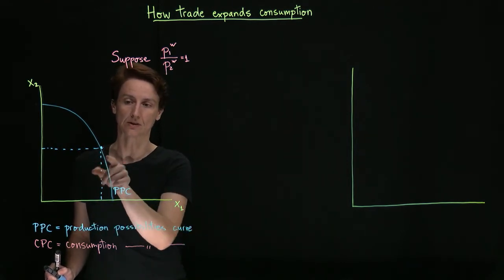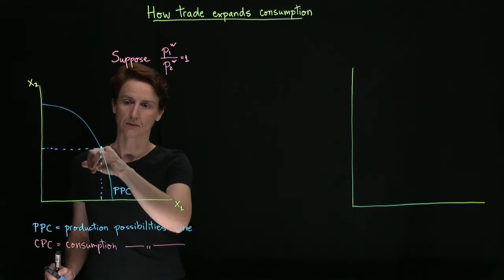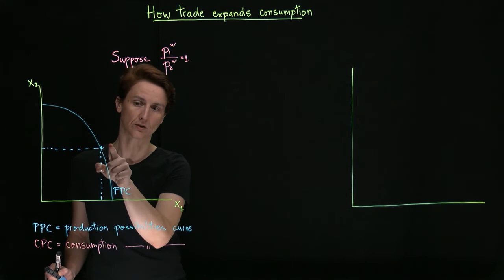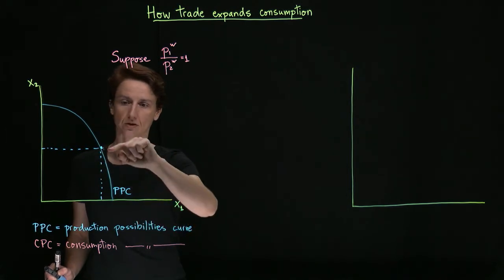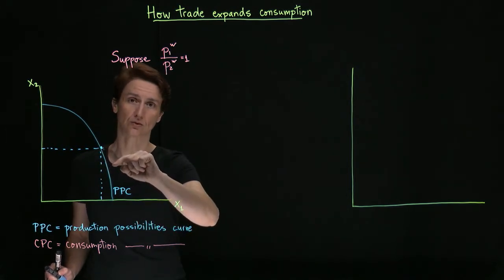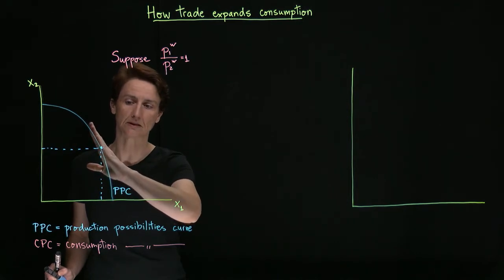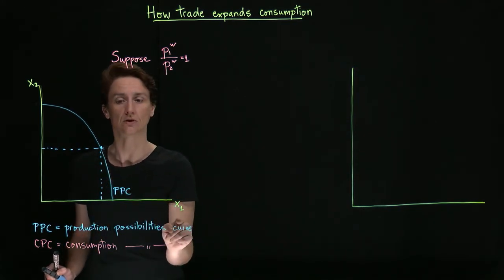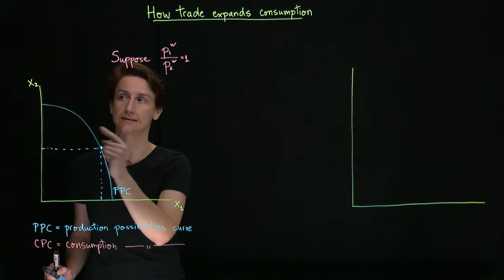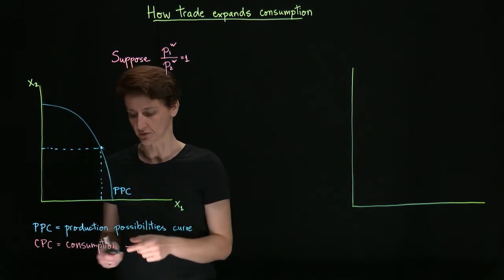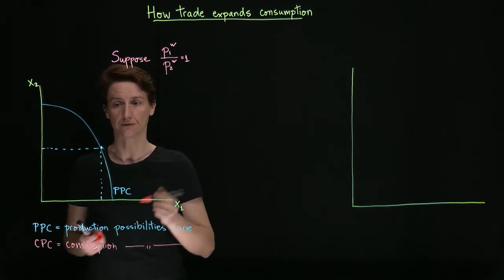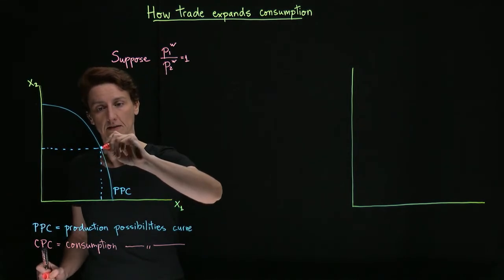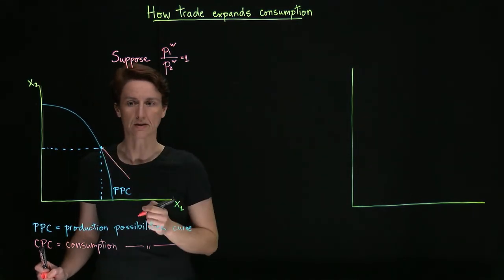Well they have one option and that is to produce more of good one. But in order to do that, in order to move over by one unit to the right, they have to stop making more than a unit of good two, because the slope of PPC here is greater than one. Well the other option now is that, we want to consume one more unit of good one, all we have to do is sell a unit of good two. So access to trade gives them the option of moving in this direction now at a slope of one.